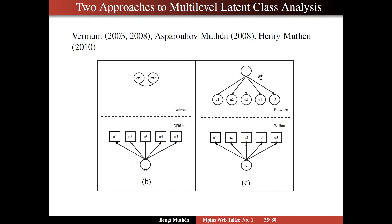On slide 35, I repeat the model that we just looked at on the left-hand side. And again, that seemed to be the original attempt that multilevel latent class analysis put forward by, for instance, Jerome Vermunt in articles 2003 and 2008. And Asparov and I also did some work on that and wrote a chapter in a mixture book in 2008. What we focused on, however, was to try to move from left to right.